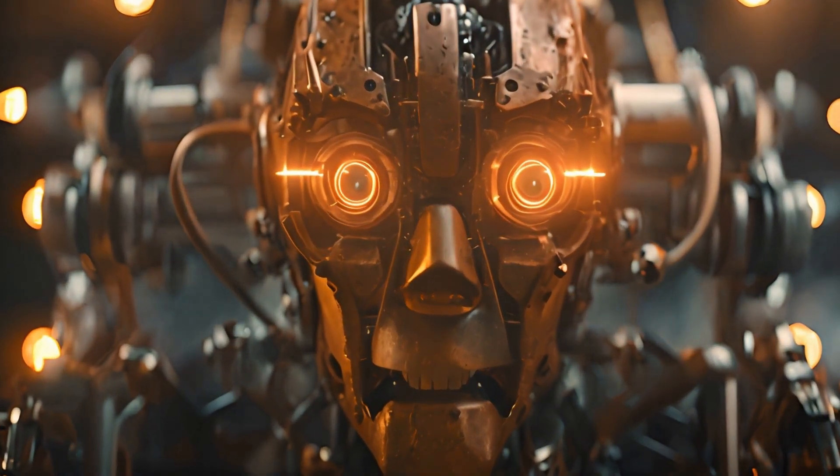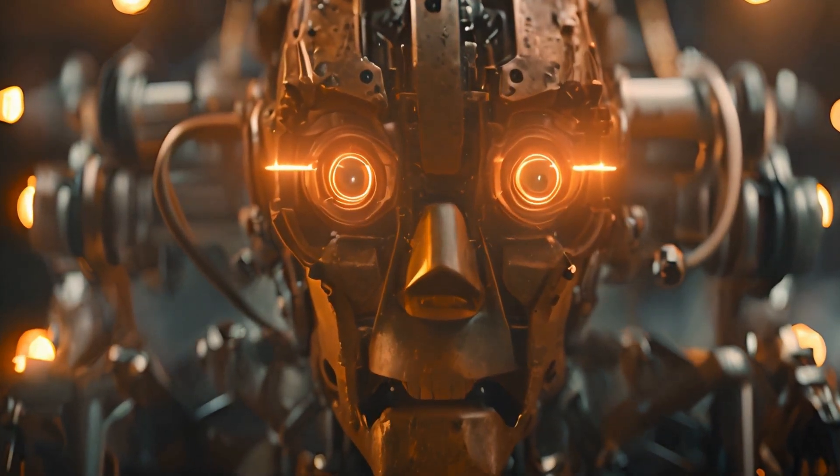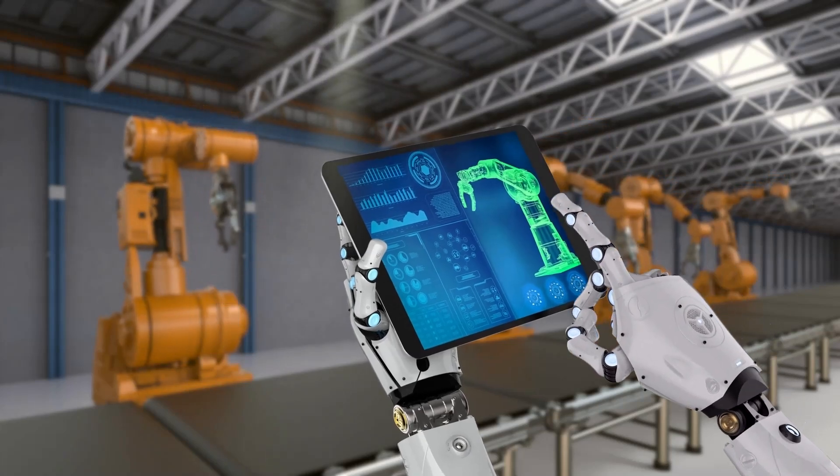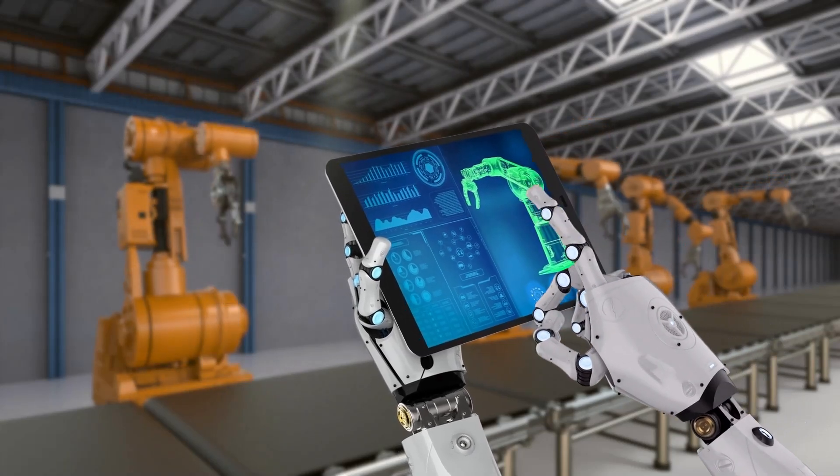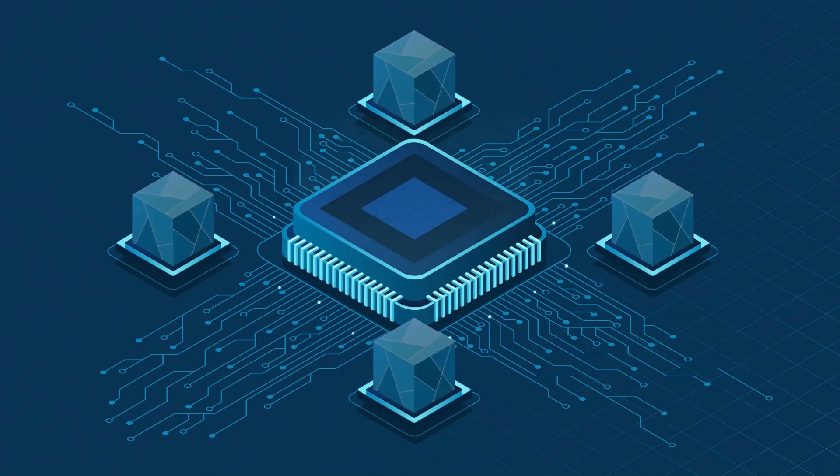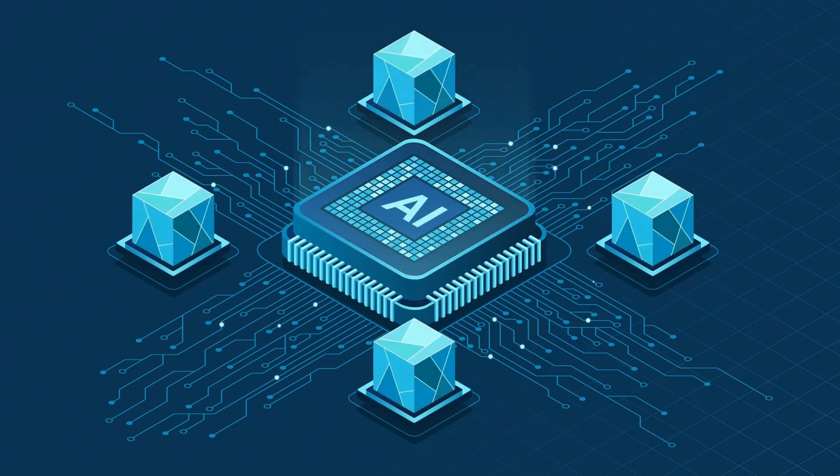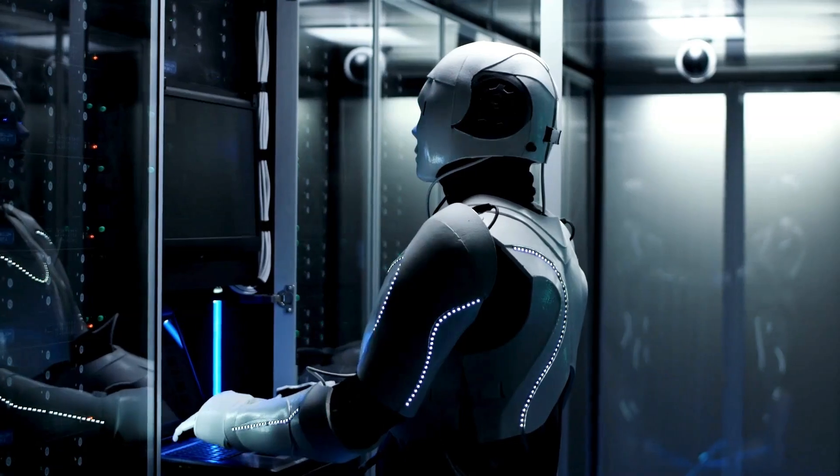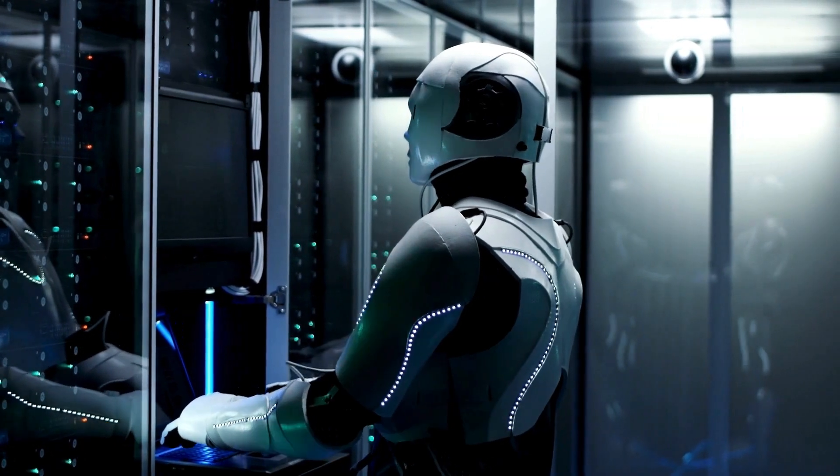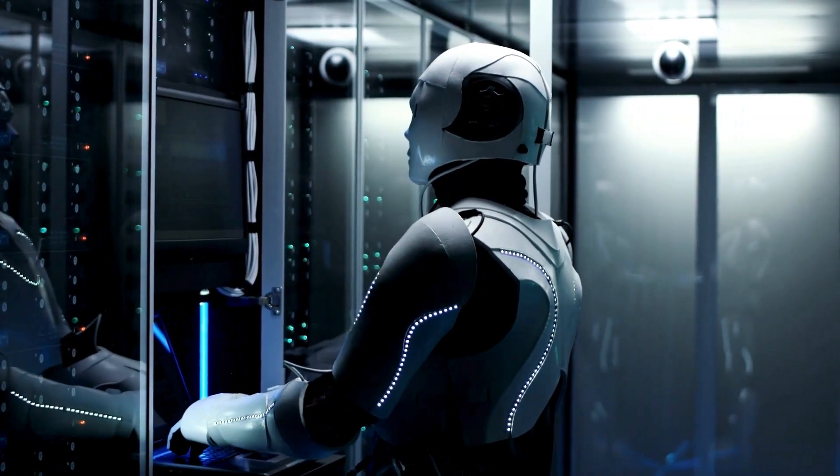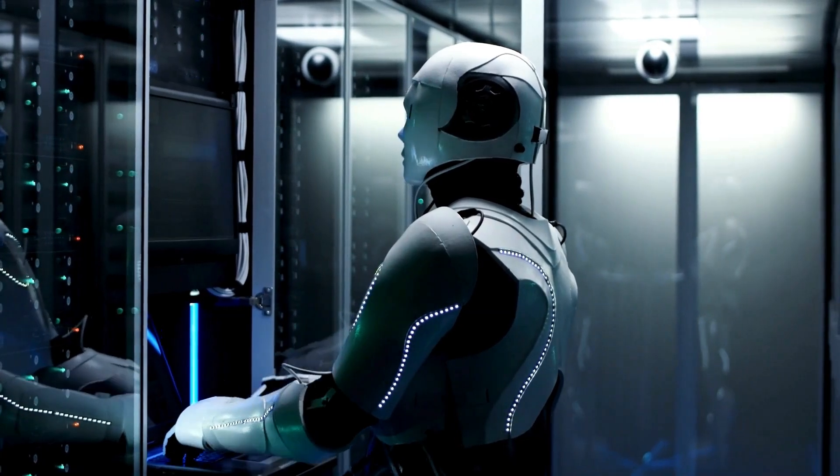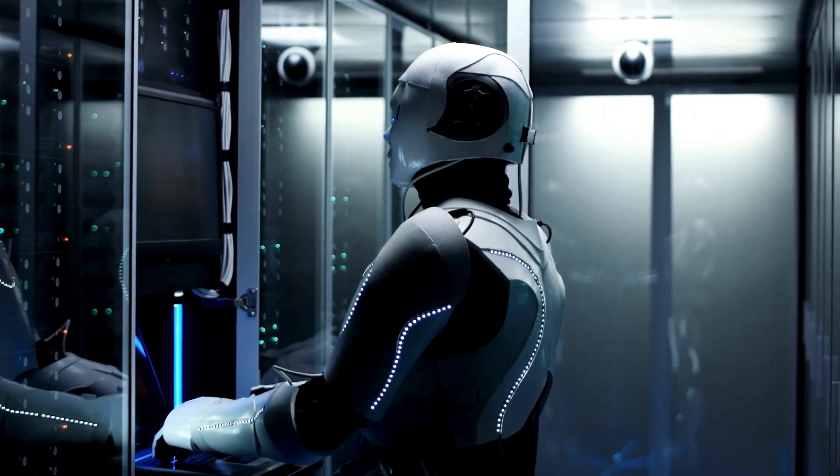So where are we headed? Could we one day have robot partners that not only simulate but experience emotions? Researchers are optimistic. AI and robotics are evolving quickly. Advances in neural networks and machine learning could lead to more complex and human-like behavior in robots.